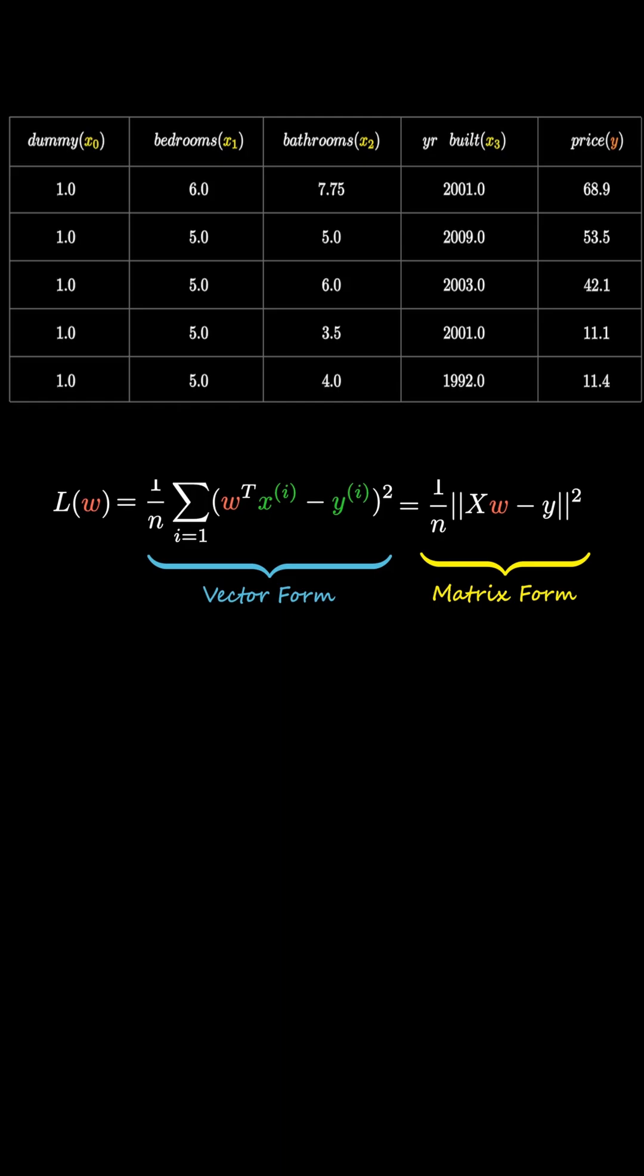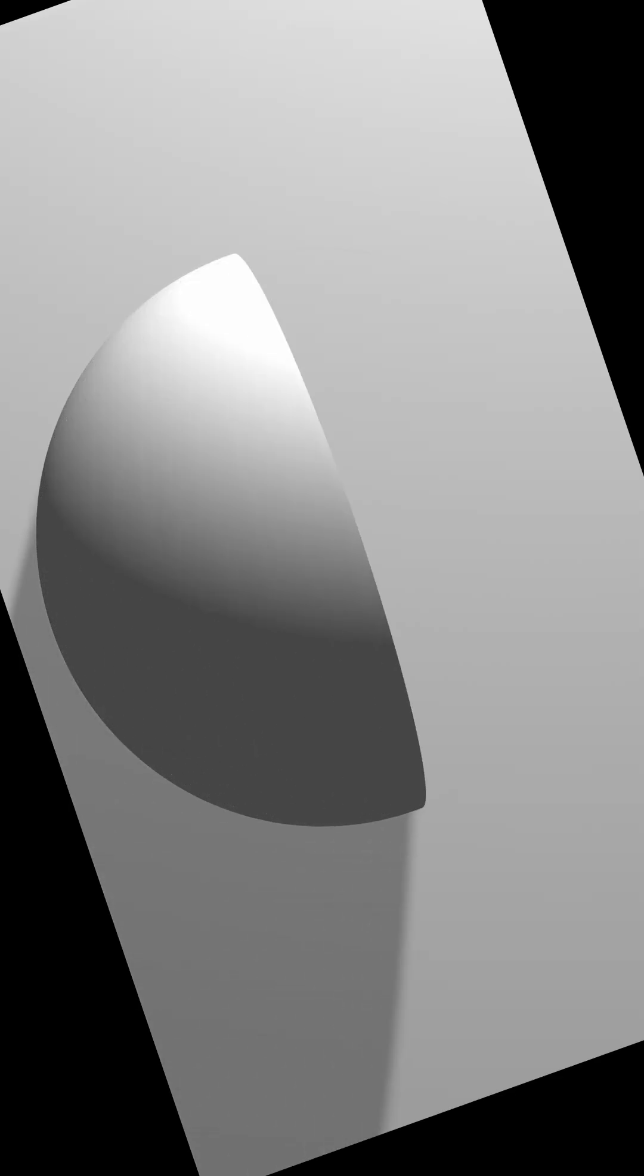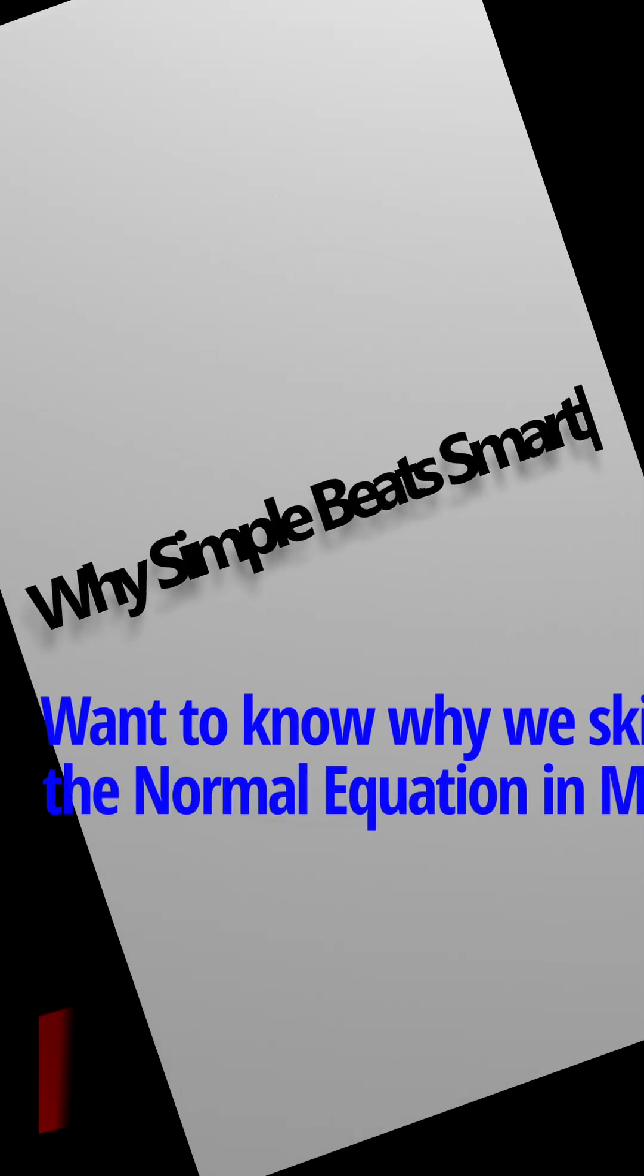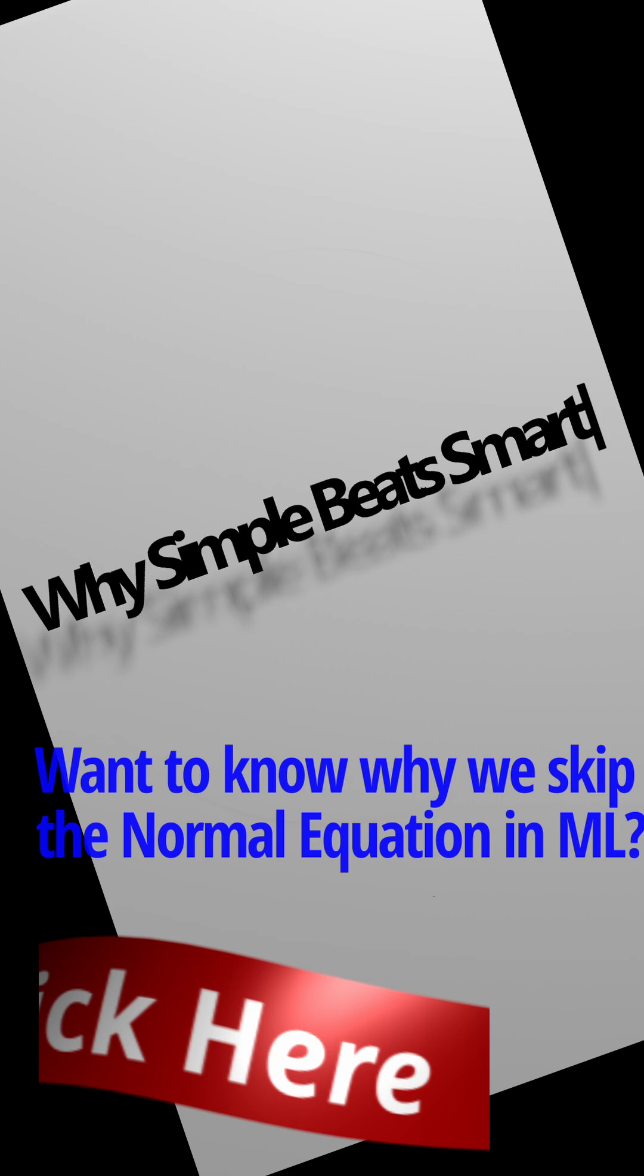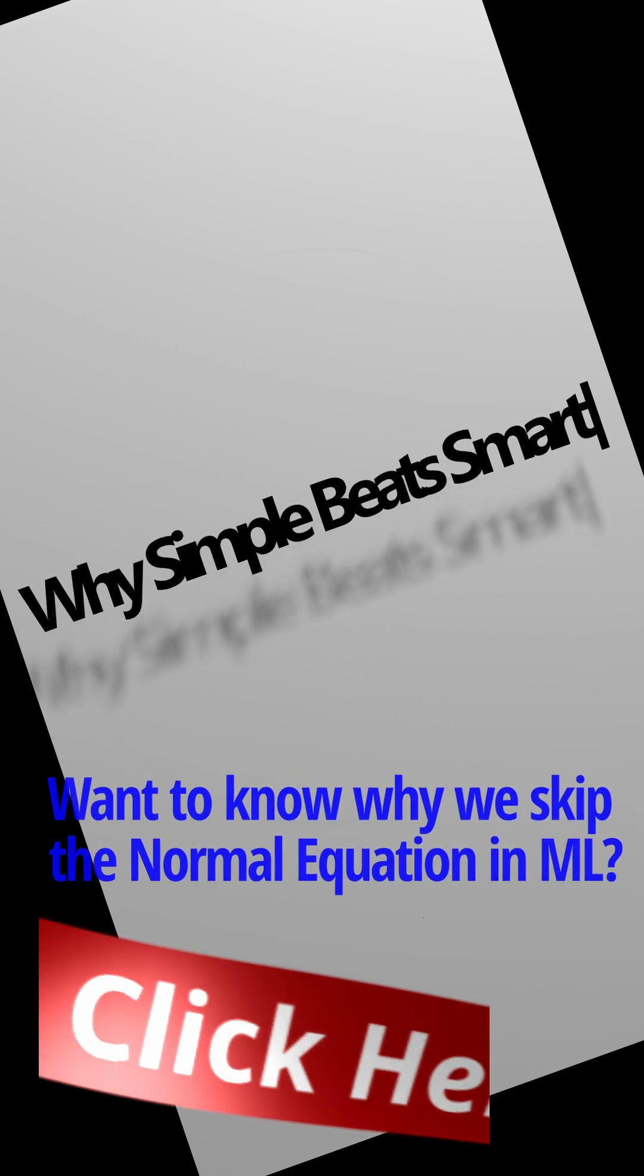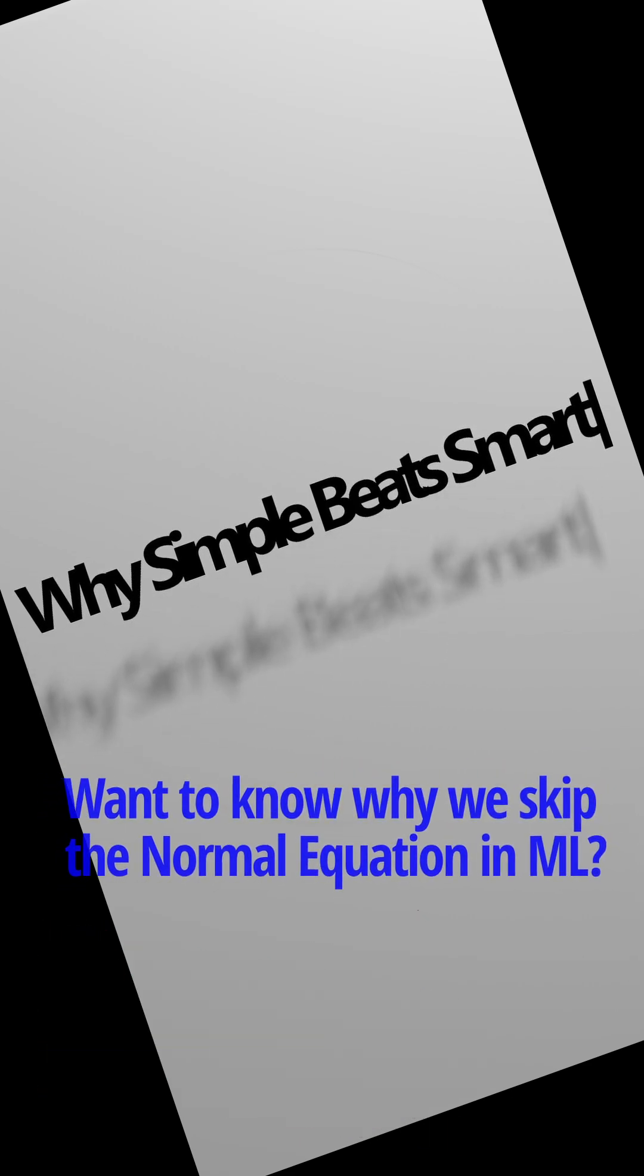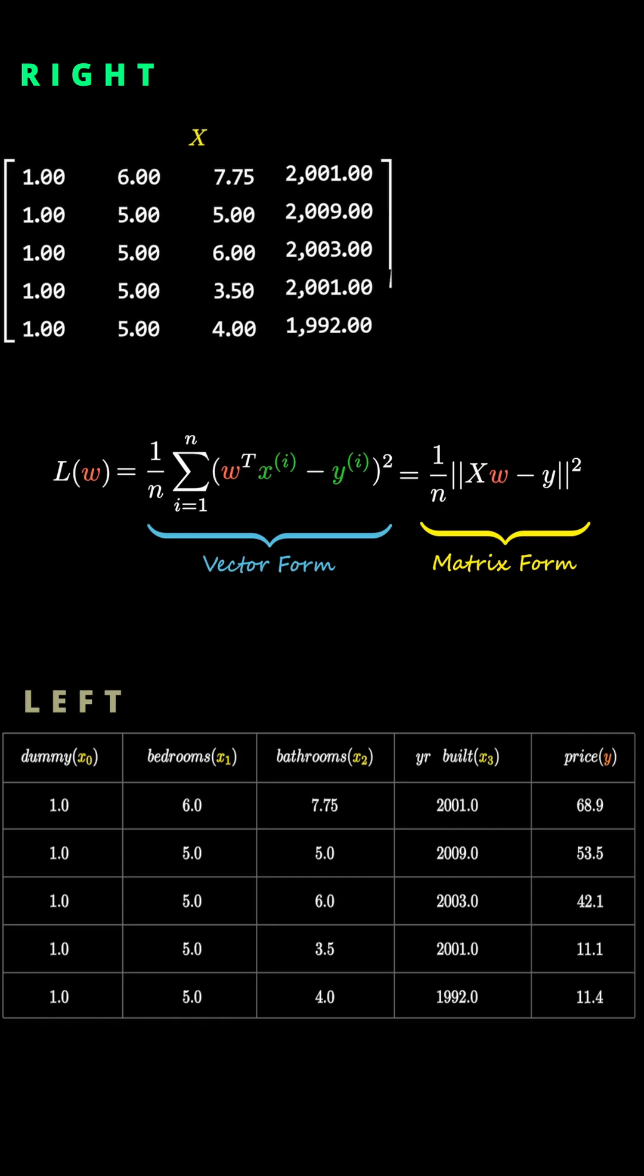Check the table on the left side of the screen. Now, on the right, we'll represent the independent variables as the X matrix, and the prices, or the target values, as the Y vector. Remember, vectors are written in lowercase, and matrices in uppercase.